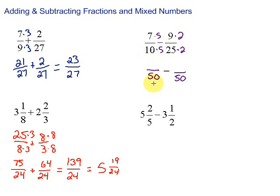10 times 5 is 50. 7 times 5 is 35. Then we have 25 times 2, which is 50. And 9 times 2. Then we have our common denominator over 50. And we are just going to go ahead and subtract right across. 35 minus 18 gives us 17. 17 over 50.